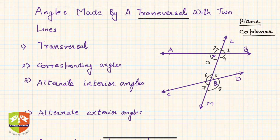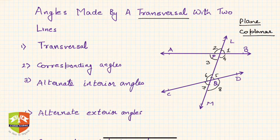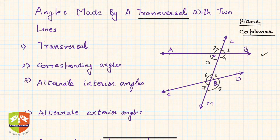Lines lying on the same plane are called coplanar lines. For example, when you take your notebook and draw any line on one of its pages and draw another line on the same page, you get two coplanar lines. Obviously there is no limit to the number of lines you can draw on a piece of paper, so all of them are coplanar lines.